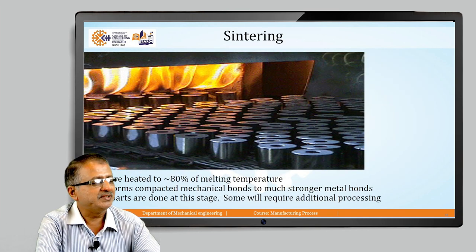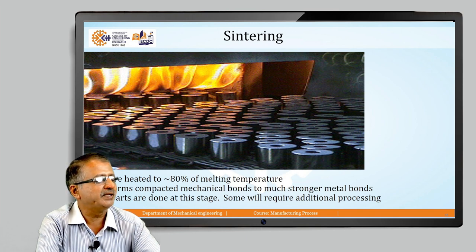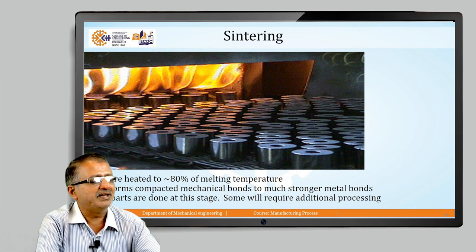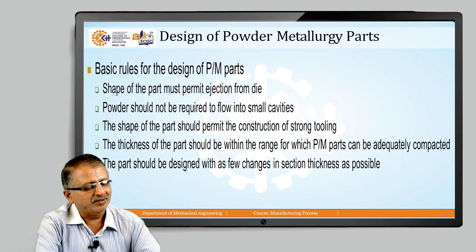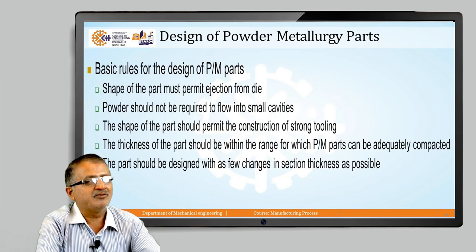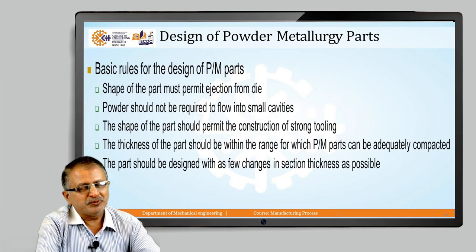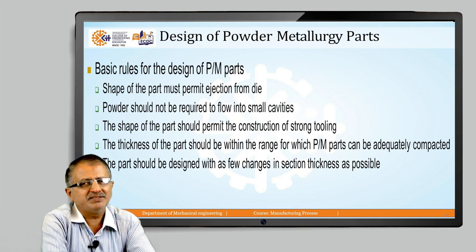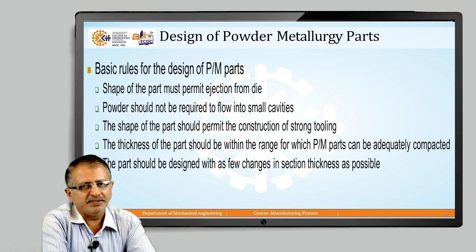This is the machine shown here. It gives a stronger metal bond. If additional processing is required in some cases it can be done; otherwise, the material is ready for dispatch.